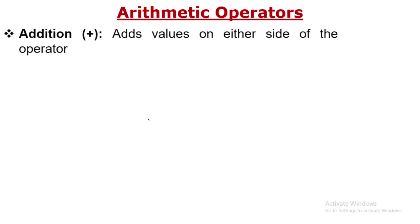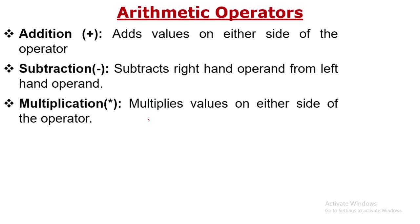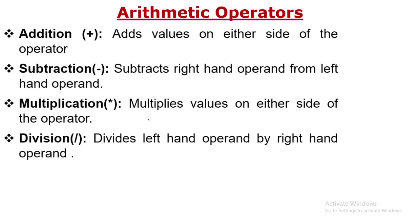Now let's start with arithmetic operators. Addition adds the values on either side of the operator — it is a binary operator, meaning it works with two values: a left-hand side and a right-hand side, with the operator in between. Subtraction subtracts the right value from the left value; the sign is given accordingly. Multiplication multiplies the left-hand side value with the right-hand side value. Division divides the left-hand operand by the right-hand operand.